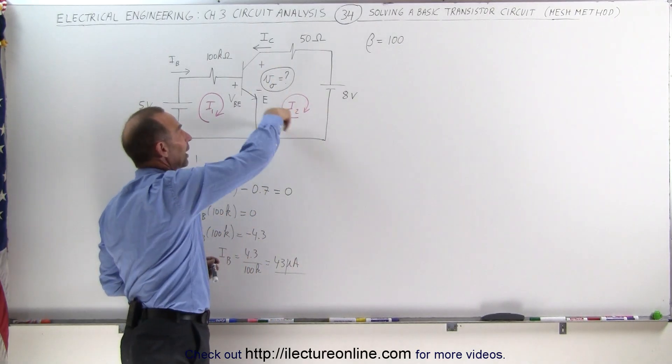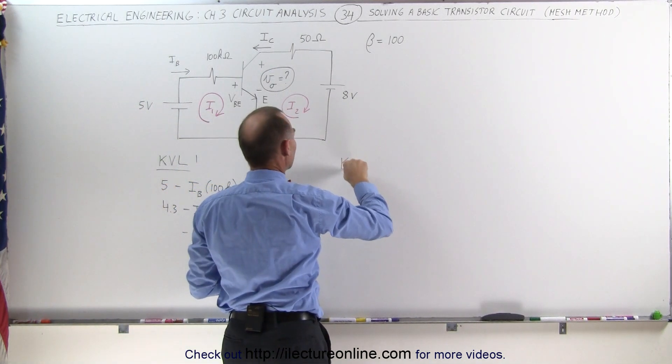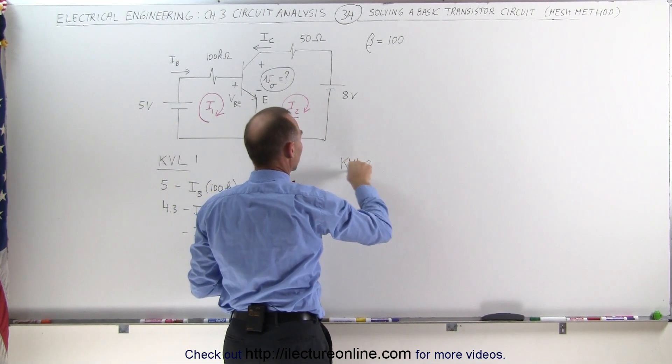Secondly, we're now going to go around the circuit right here. Again, we use the KVL method, KVL for loop number two. And starting at this point, going around like this,